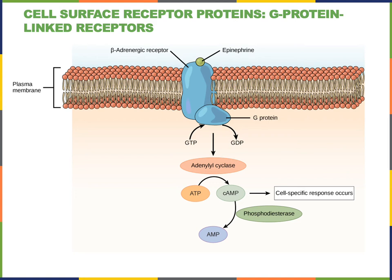Then the G protein will dissociate from the receptor and can bind to an enzyme. The enzyme adenylyl cyclase will be activated by the G protein. Adenylyl cyclase catalyzes the conversion of ATP — adenosine triphosphate — into cyclic AMP, cyclic adenosine monophosphate. Cyclic AMP is the second messenger in this pathway and will bind to proteins including protein kinase A, which will be activated by cyclic AMP. Protein kinase A can then catalyze phosphorylation of other proteins in order to regulate their activity.